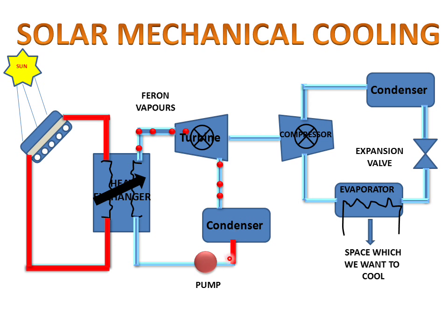At the condenser, the freon is converted into liquid, and this liquid goes further to the heat exchanger. When the vapors strike the turbine, the turbine rotates. It rotates the compressor shaft, and the compressor rotates and produces coolant vapors. These vapors go to the condenser, where they are converted into liquid, and this liquid is cooled by the expansion valve.